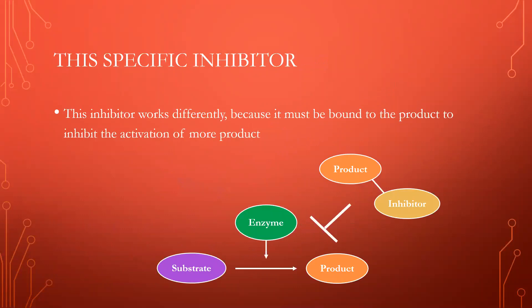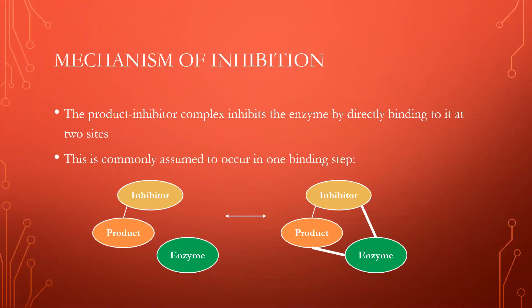However, our specific inhibitor we have been investigating is different in that to effectively block the activation of product, the inhibitor must be bound to product. Then, this complex of product and inhibitor blocks the enzyme from activating more product. This does create a negative feedback loop, where some product must initially be in the bloodstream for the inhibitor to prevent the further activation of more product.